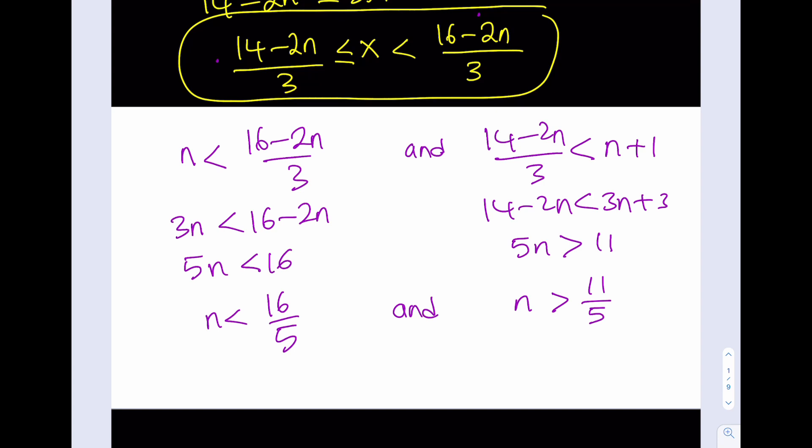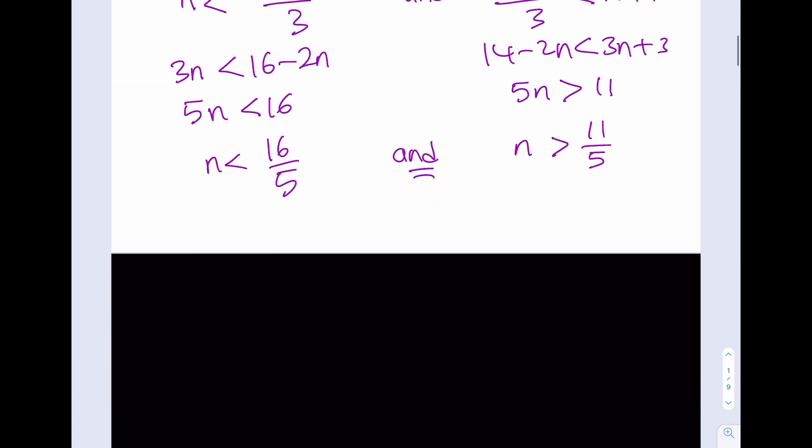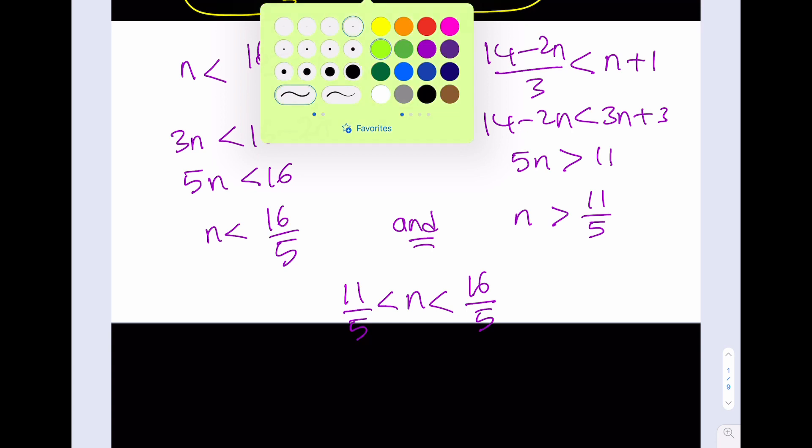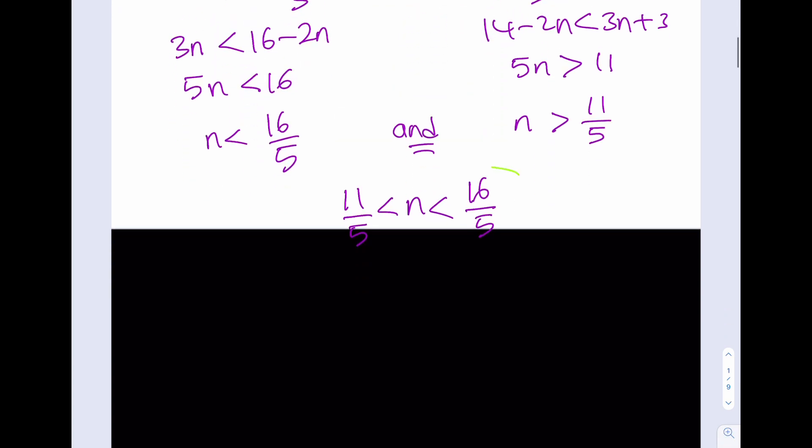at this point, you're thinking, I have an n, so that's an intersection. This means n needs to be between 11 over 5 and 16 over 5. Correct? Awesome. Now, what am I going to do? Well, I'm going to put these together where I already did. So this is my conclusion. But don't forget, n is an integer.